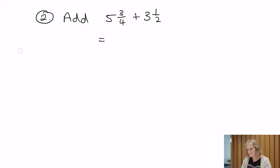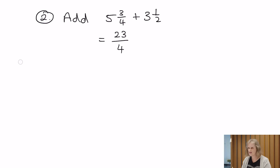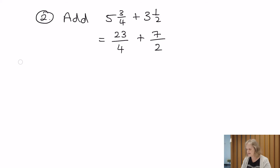To change 5 and 3 over 4 into an improper fraction, we use: whole number times denominator. 5 times 4 is 20, and 20 plus 3 gives us 23 for the numerator — the denominator stays the same. Likewise for 3 and a half: 3 times 2 gives us 6, plus 1 gives us a new numerator of 7, and the denominator stays the same.